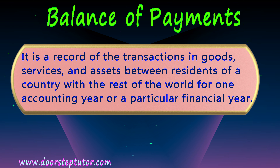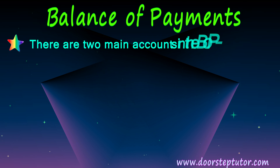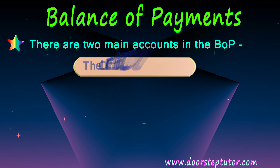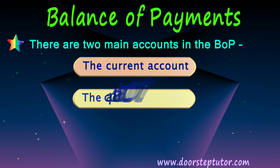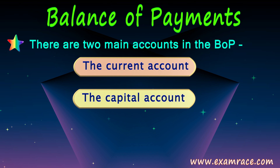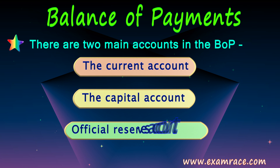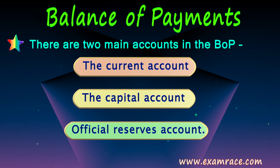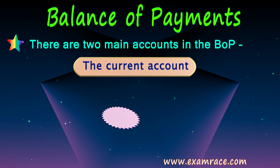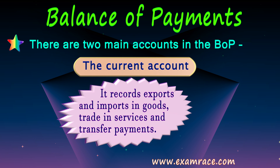The balance of payments consists of two main accounts: the current account and the capital account. But in the case of India, we have three kinds of accounts: current account, capital account, and official reserve account. Let us look at all of these. The current account records exports and imports in goods, services, and transfer payments.